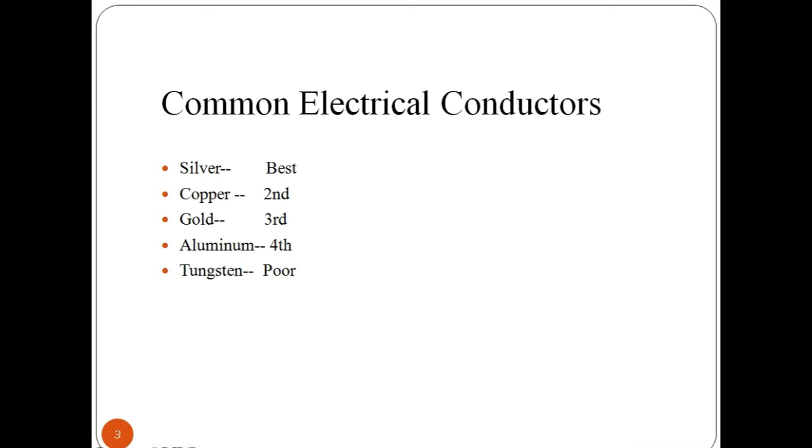Some common conductors are silver, copper, gold, aluminum and tungsten. Here we have ranked silver as the best conducting metal followed by copper and other metals.